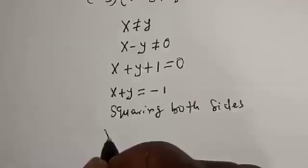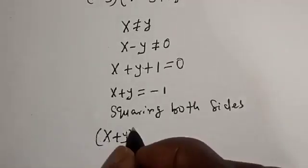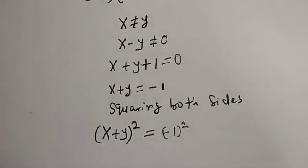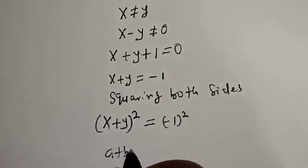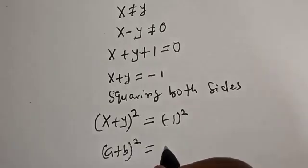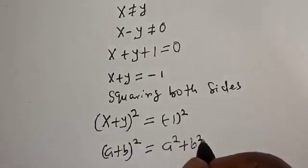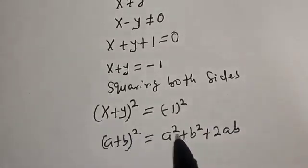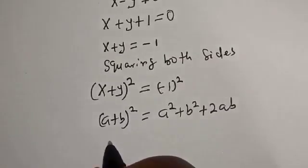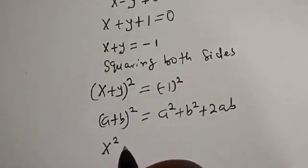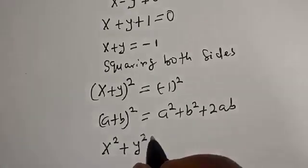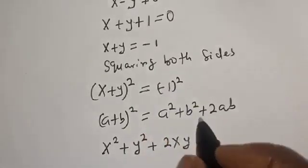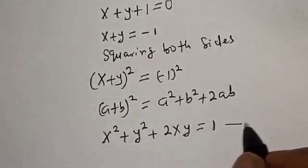Now let's square both sides: (x plus y) squared equals (minus 1) squared. Using the expansion a plus b squared equals a squared plus b squared plus 2ab, we get x squared plus y squared plus 2xy equals 1. Let's call this equation star.